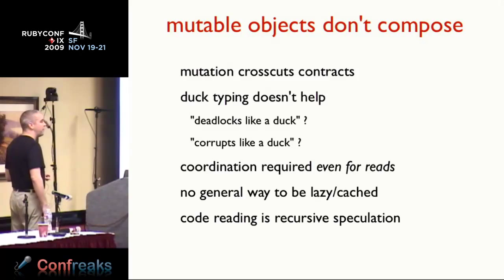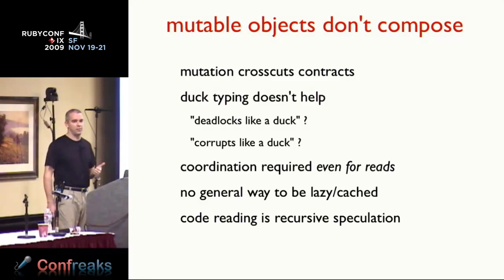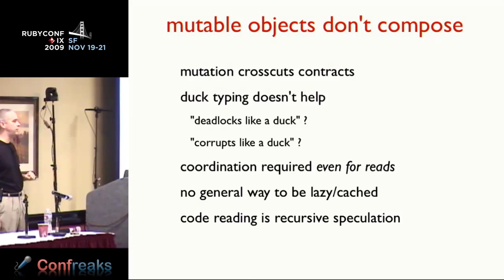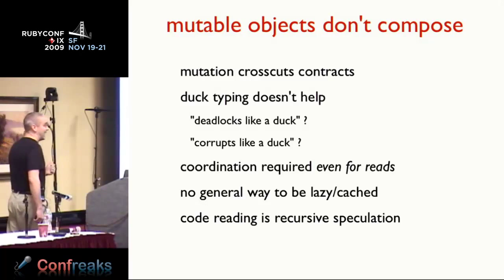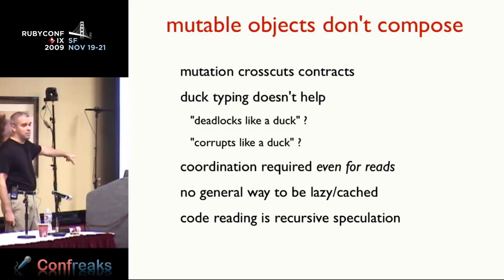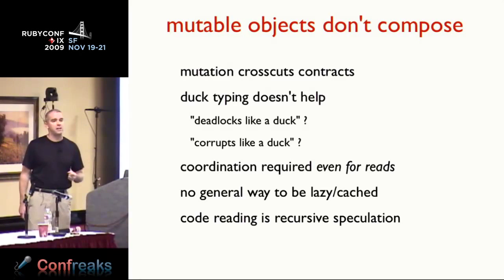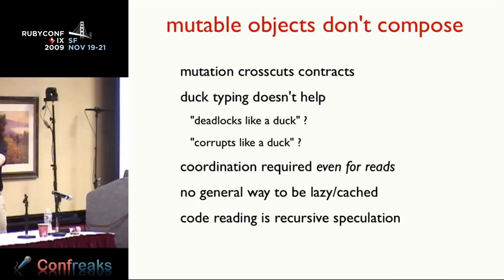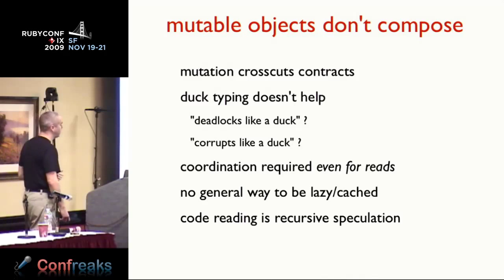Mutable objects don't compose. With mutable objects, you have to have coordination even for reads. The double-checked locking problem is a symptom of trying to wrestle with why we have to coordinate reads. There's no general way to be lazy or cached with mutable objects, because I can't do anything lazy or caching with an object that might change when I'm not looking at it. And reading code becomes a recursive exercise in speculation — you look at some code and go, 'Well, that depends on that, but that could be mutable.' You have to do recursive speculation to decide what code does.